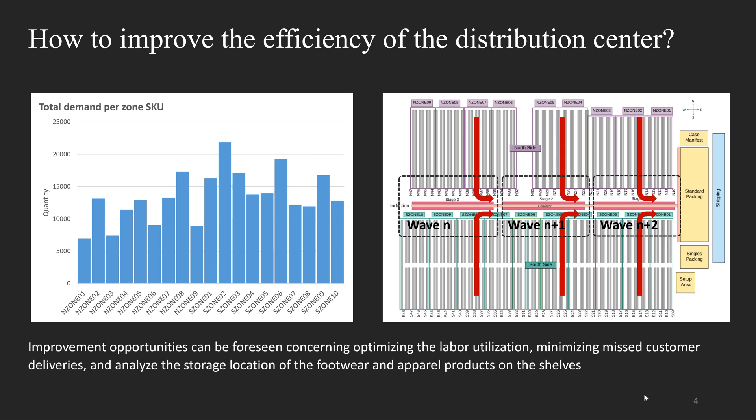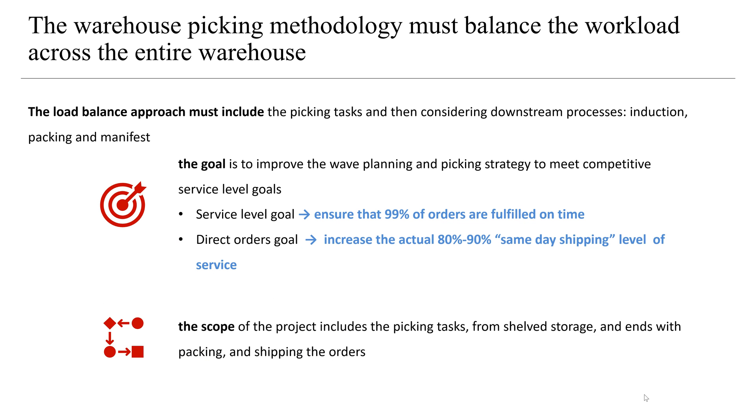In the right-side graph, we can see the layout of the warehouse. The warehouse storage space is split into a north area and a south area, each comprised of shelving aisles that run perpendicular to the induction conveyor. The MDC is transitioning to a wave picking management methodology, where waves will coordinate pickers that collect units from their storage locations. This project will look into workforce optimization, minimization of missed customer deliveries, and analysis of storage locations. The wave picking methodology must balance the workload to ensure a stable workforce, along with meeting the service level goal and the direct orders goal.